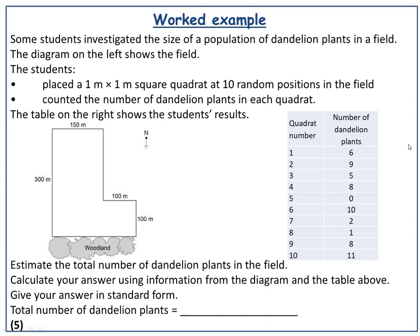As a worked example — this is actually a past exam question. Some students investigated the size of a population of dandelion plants in a field. The students placed a 1 metre by 1 metre square quadrat at ten random positions in the field and counted the number of dandelion plants in each quadrat. The question asks: estimate the total number of dandelion plants in the field. Calculate your answer using information from the diagram and the table. Give your answer in standard form. It's worth five marks.